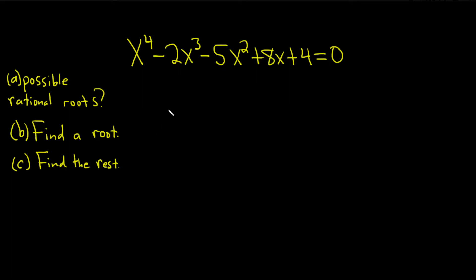In this problem, we have a degree 4 equation. This is called a quartic equation, and we have to answer a few questions. In part A, we have to list the possible rational roots of this equation. In part B, we have to find a root using synthetic division and the answers from part A. And in part C, we have to find the rest of the roots. Let's go ahead and work through it.